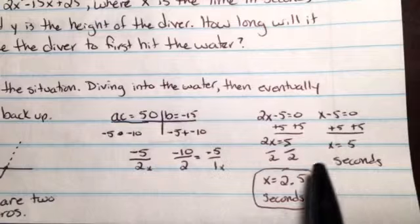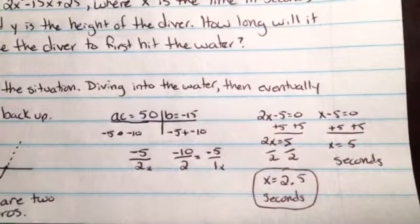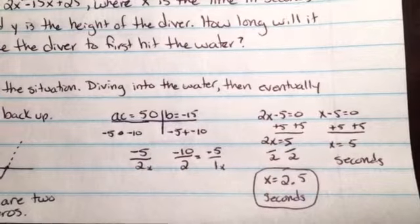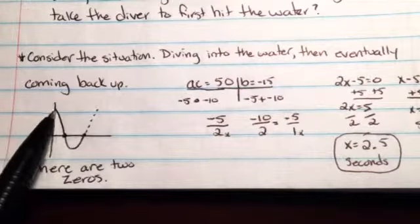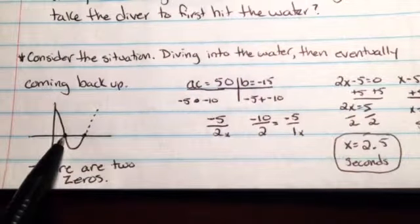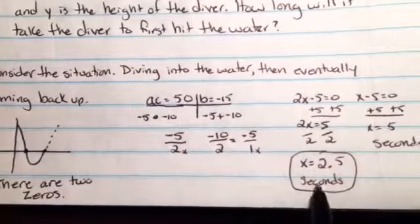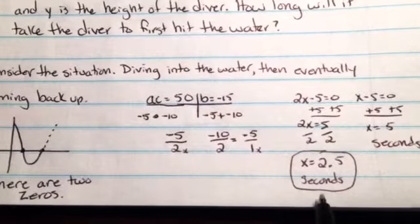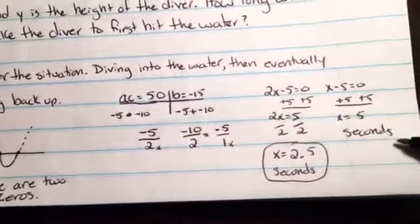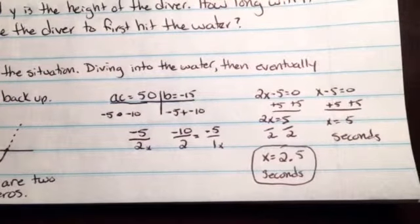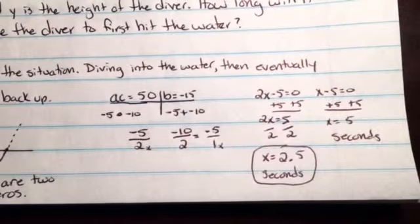Now why didn't I choose this one? They're both positive answers. Remember, it said when will the diver first hit the water? And that was why I said, consider what the situation would look like. When the diver first hits the water, that's going to be the lower value. So the 2.5 seconds represents the time that he first hits the water. What would the 5 seconds represent? That represents the time that he returns to the water's surface after he has gone under the water.